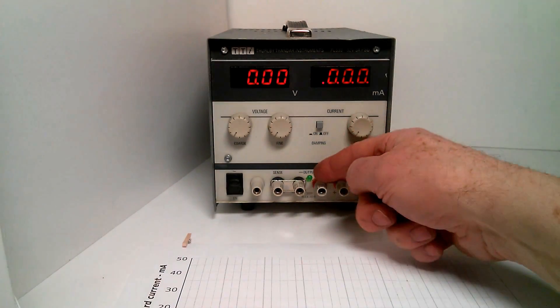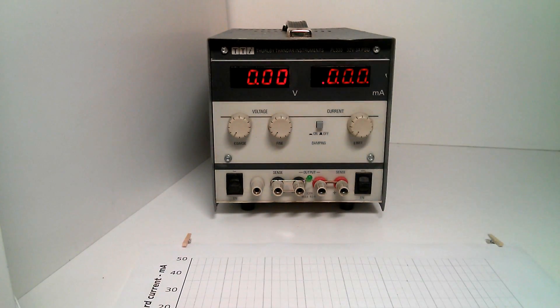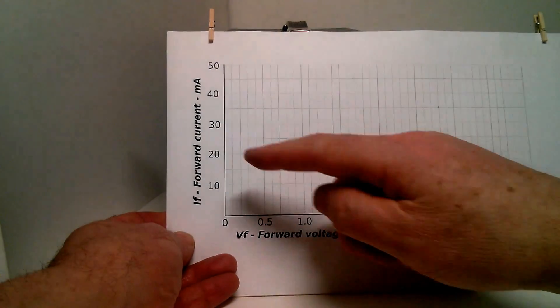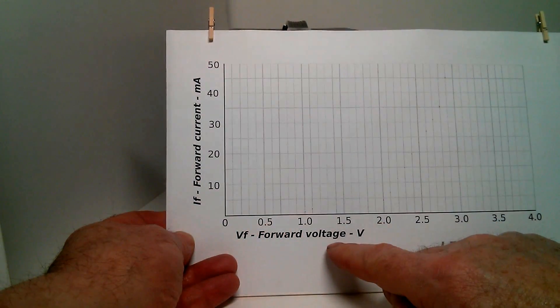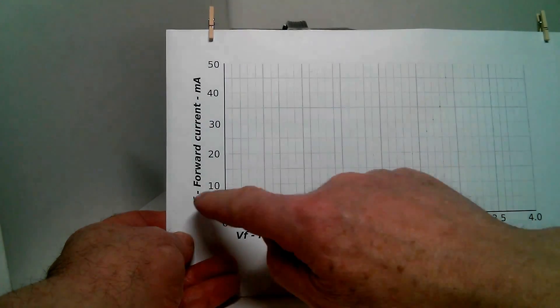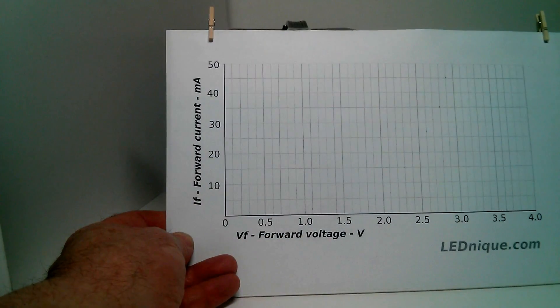In this video we're going to take a green LED, a bench power supply, and some graph paper and plot what happens to current as we adjust the voltage on the LED. The result of this will give us the IV curve for the LED.